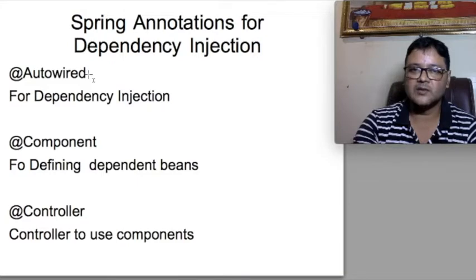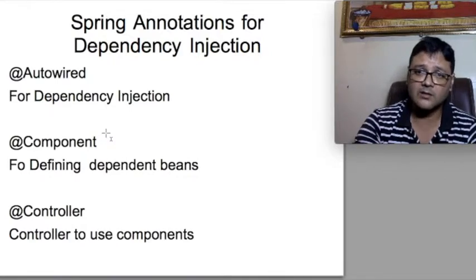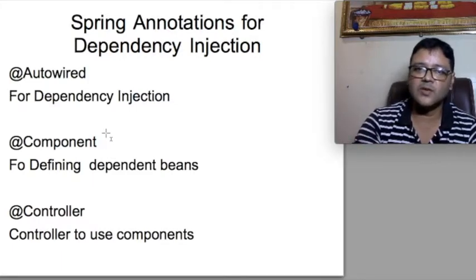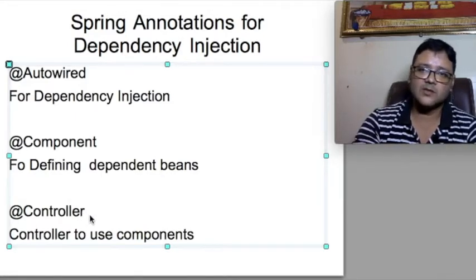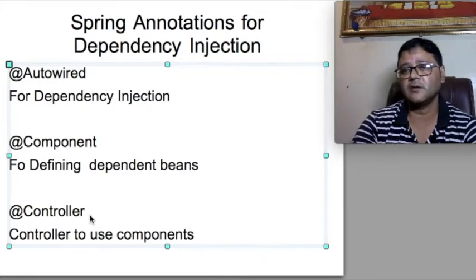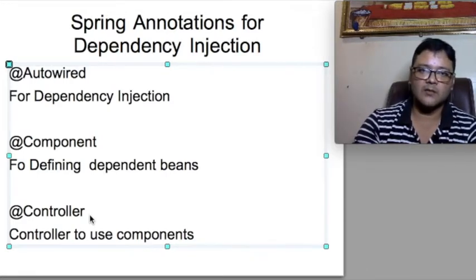We can go for dependency injection with the help of a constructor or setter methods, but the easiest one is @Autowired. The @Component annotation is also used — this is a modern way of using Spring. Previously we used XML for defining beans; you might have used a bean.xml, which is no longer used in Spring 5 or Spring Boot 2.3. You can use @RestController to demonstrate dependency injection and loose coupling. Let us have a look at a simple real-life code using Spring Boot in STS.